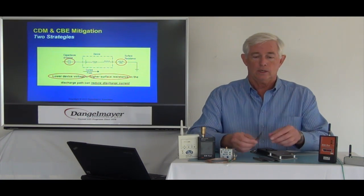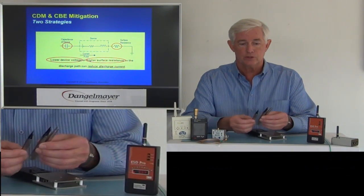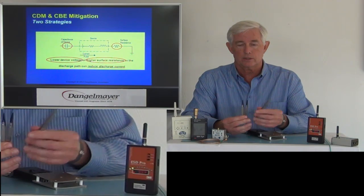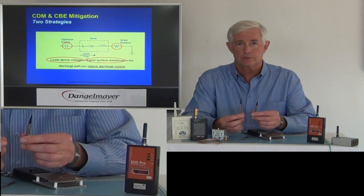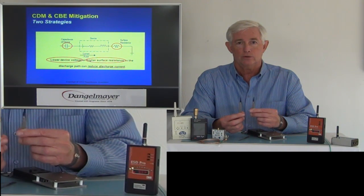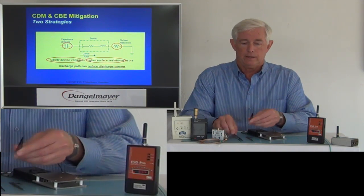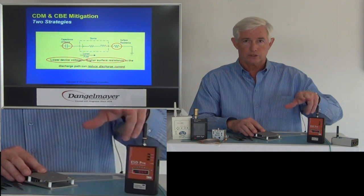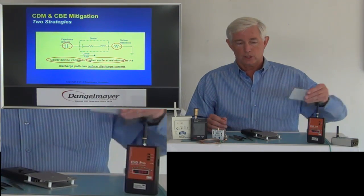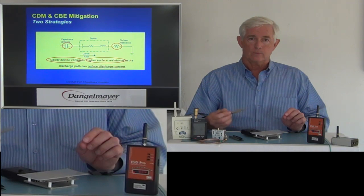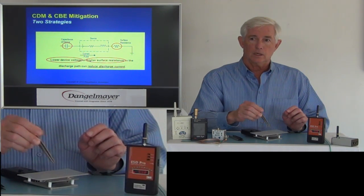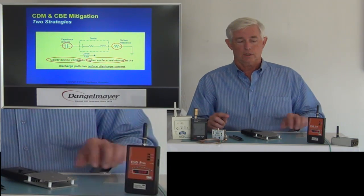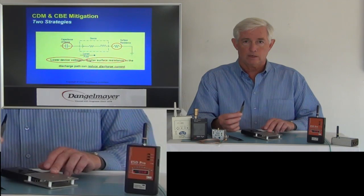What I'm going to demonstrate now are mitigation techniques using that surface resistance property with tweezers. We have three different types of tweezers here: a metal pair and two black-tipped tweezers. I have the event detector set to trigger a tone when a discharge occurs. I'm going to charge this insulator, place it on the plate, and then touch it with this pair of metal tweezers. You can see right at the moment of contact, we got a discharge from the event detector, which recorded the event and the detection.